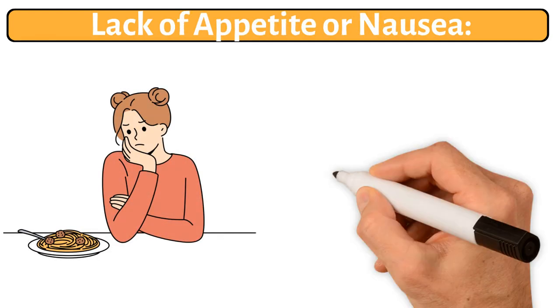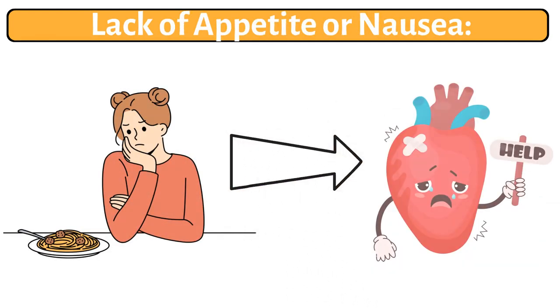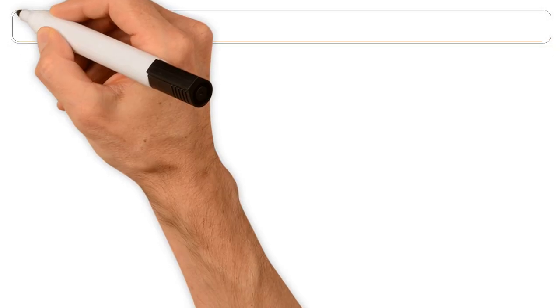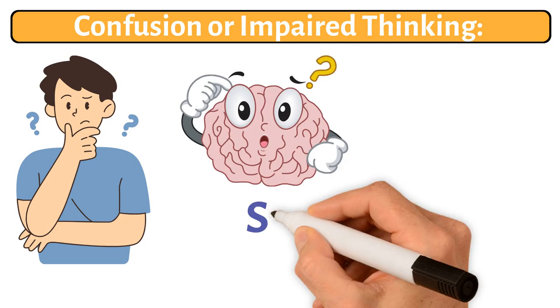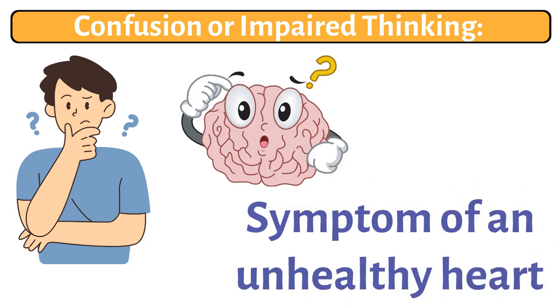5. Lack of appetite or nausea. An unexplained loss of appetite or nausea could be related to heart failure. 6. Confusion or impaired thinking. Changes in your thinking or memory could be a symptom of an unhealthy heart.